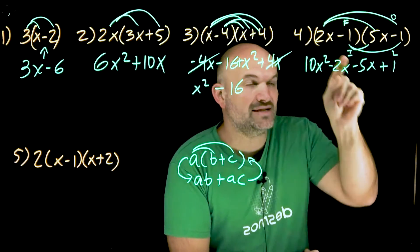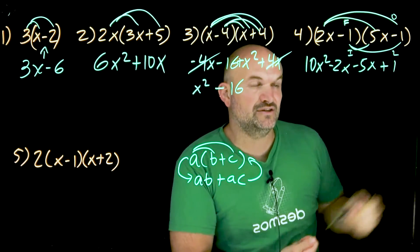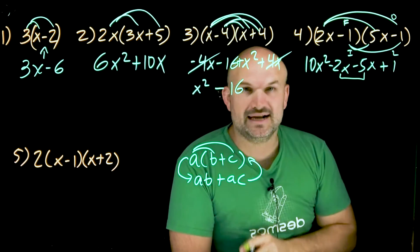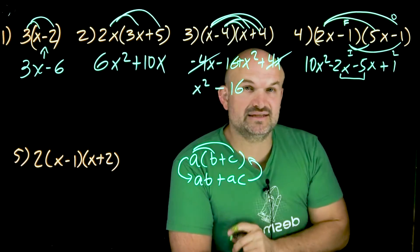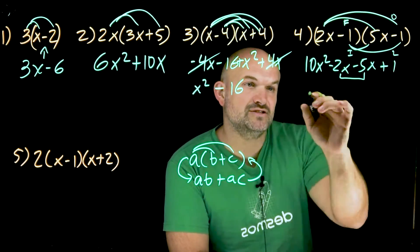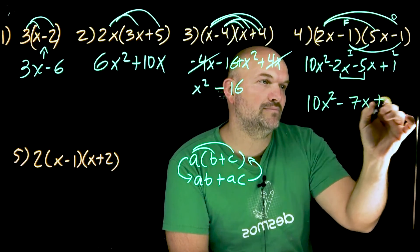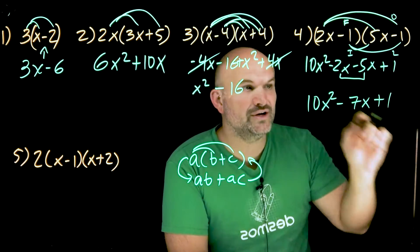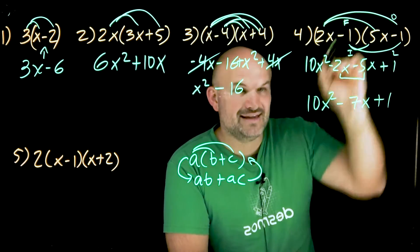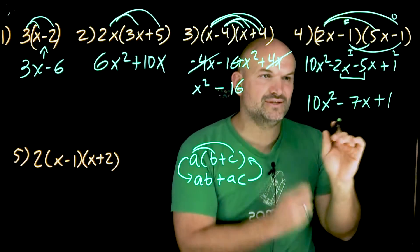When I go to simplify this negative two X minus the five X is a negative seven X. So when you go to simplify there, these are the only two terms that I can go ahead and simplify. I can't combine everything with the 10 X squared. I can't combine anything with the one. These two terms though can simplify. So my final answer is a 10 X squared minus a seven X plus one. And guess what? We're going to learn how to factor from here to there. Sometimes you could do it in your head, but this might be a little bit difficult, but I want you to be able to see.